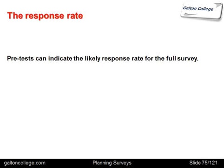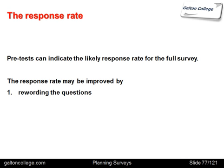Now, the response rate. Pre-tests can indicate the likely response rate of the full survey and can throw up issues such as bad or misunderstood questions, which can be refined to help improve the response rate. The response rate may be improved by rewording the questions, changing the data collection method, or even shortening the questionnaire or reducing the number of questions. The pilot will indicate these problems and be a good indicator of remedial action that can be taken before the main survey takes place.